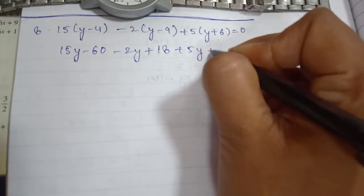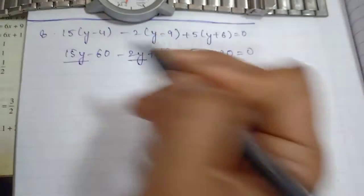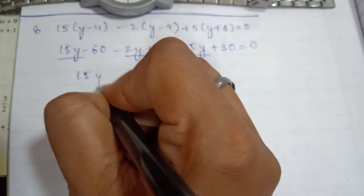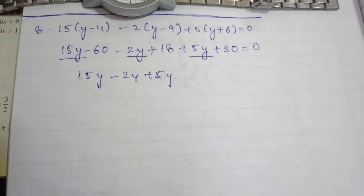Now take all these variables together: 15y - 2y + 5y, and the constants together: -60 + 18 + 30 = 0.